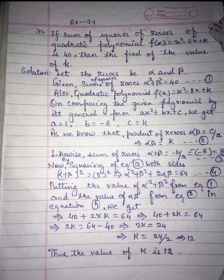This implies when we do (a plus b) whole square, alpha squared plus beta squared plus 2 alpha beta is equal to 64. Now let's consider equation number 4.